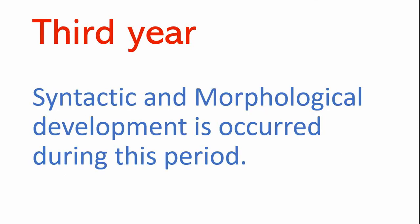In the third year, syntactic and morphological development occurs. The child is now making sentences using syntactic knowledge and can make morphological distinctions — for example, understanding the difference between 'work' and 'worked' for past and present tense. They grasp morphological knowledge like the difference between 'agreement' and 'disagreement,' 'management' and 'mismanagement,' or 'boy' and 'boyish,' 'girl' and 'girlish.' The child may not be able to explain the rule but knows it intuitively.